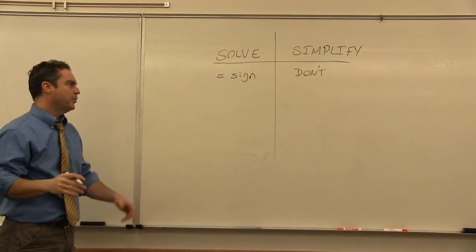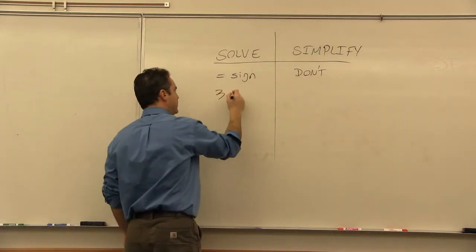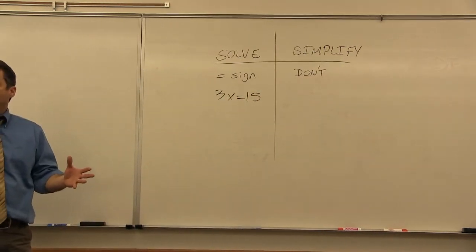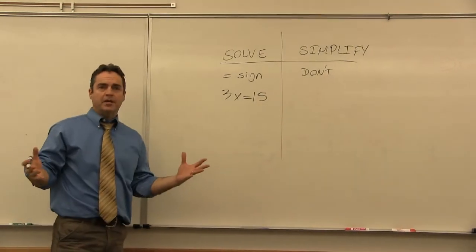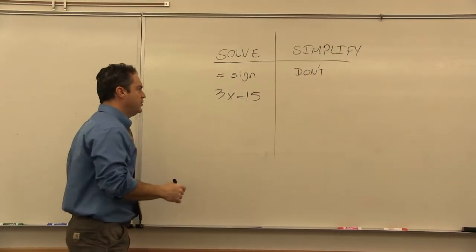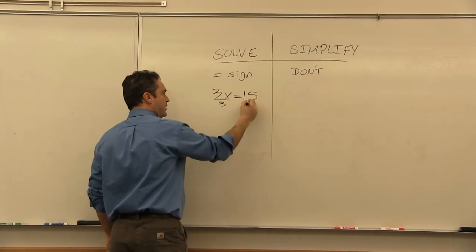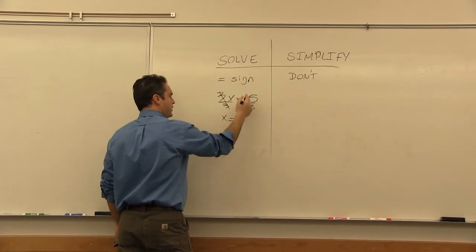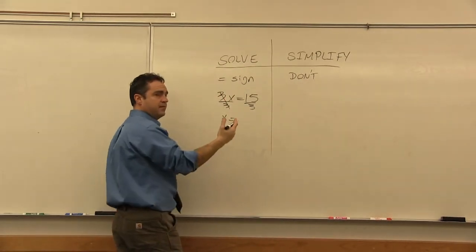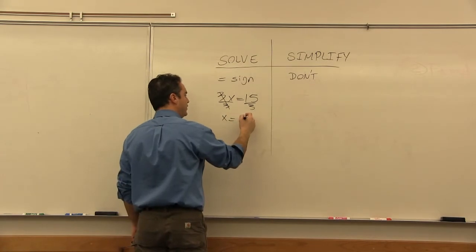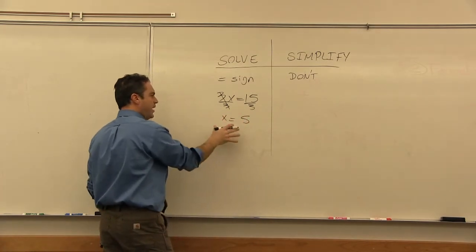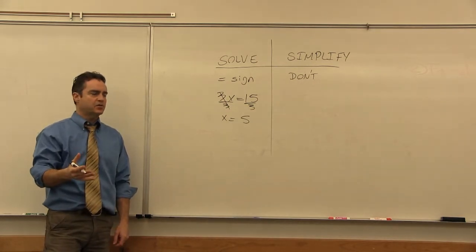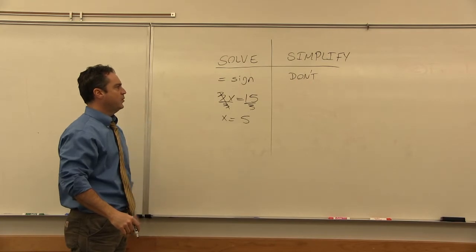Let's take a simple example. What is the answer to 3x = 15? Everybody says five. We divide this side by three and divide this side by three, so x equals five. We literally find out what the variable equals — that's what constitutes a solved problem.